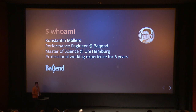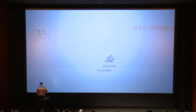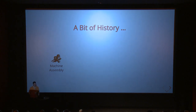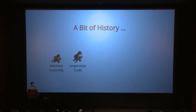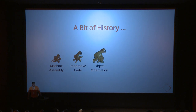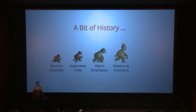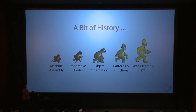Now let's focus on WebAssembly. But before we start, a bit of history. Where did we come from? At first we had some kind of machine assembly code, then imperative code — things started getting better. We even had object orientation, and then fancier stuff like pattern matching and functional programming style. And now we're going back, actually, to assembly. So we had the banana here, and now we have the banana there too.